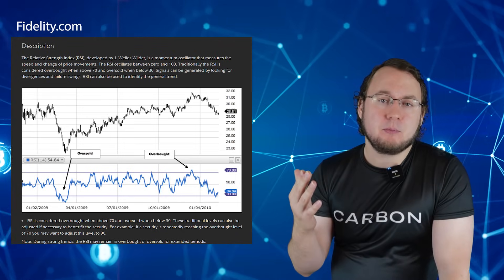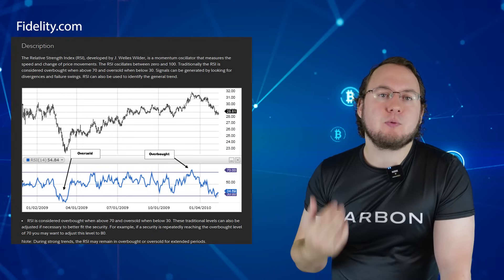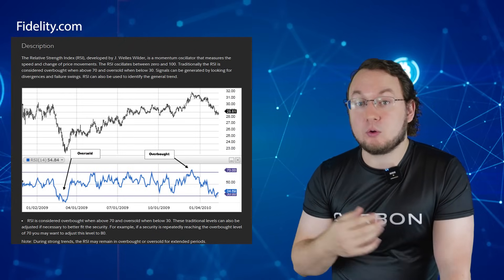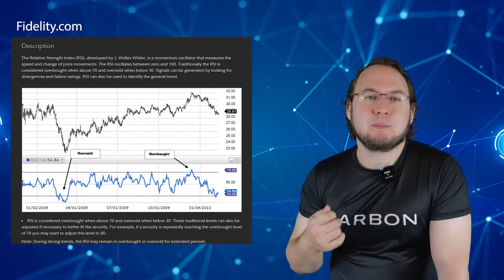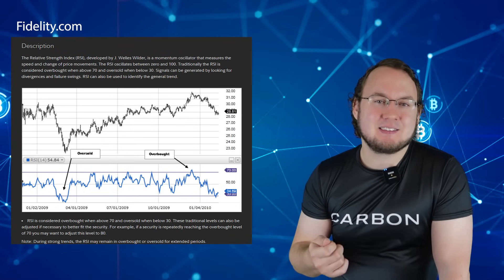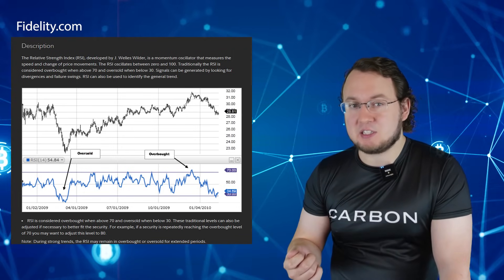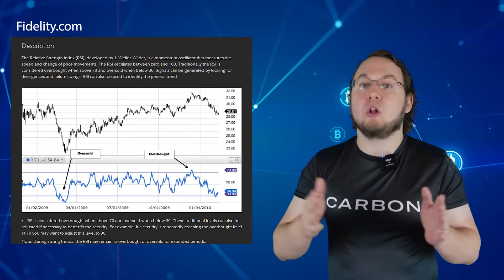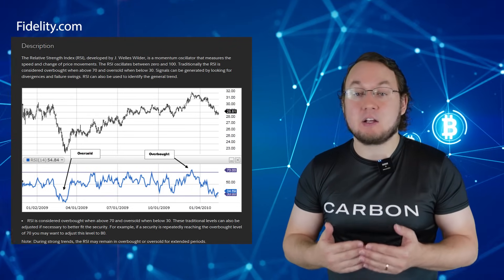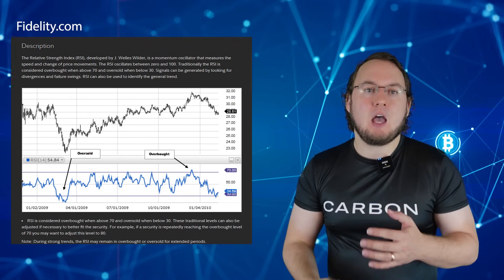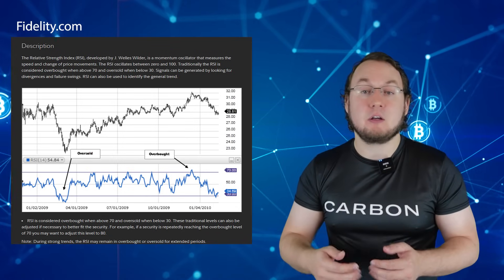We're going to talk about the RSI, the Relative Strength Index, because it's the easiest to understand. The RSI is a number from 0 to 100, and it represents if a stock is oversold or overbought. It's used as a metric of stock price health, applied to stocks to see if recent price action is justified based on prior long-term price action. When people sell, a stock's RSI goes down, and when people buy, a stock's RSI goes up.